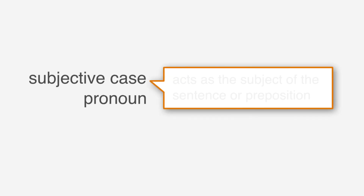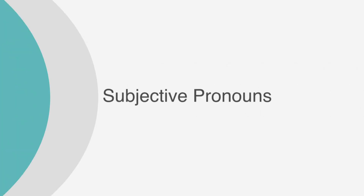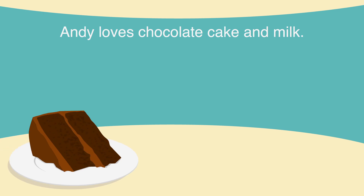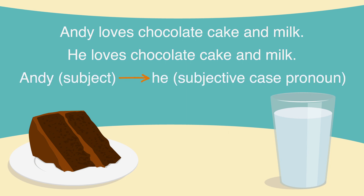The next pronoun rule to pay attention to is the pronoun case — that is, whether the pronoun is a subject or an object. The subjective case pronoun acts as the subject of the sentence or preposition. Subjective pronouns are he, she, I, it, they, we, and you. For example: Andy loves chocolate cake and milk becomes he loves chocolate cake and milk. This is an example of the subjective case, where the subject Andy is replaced by the subjective case pronoun he.